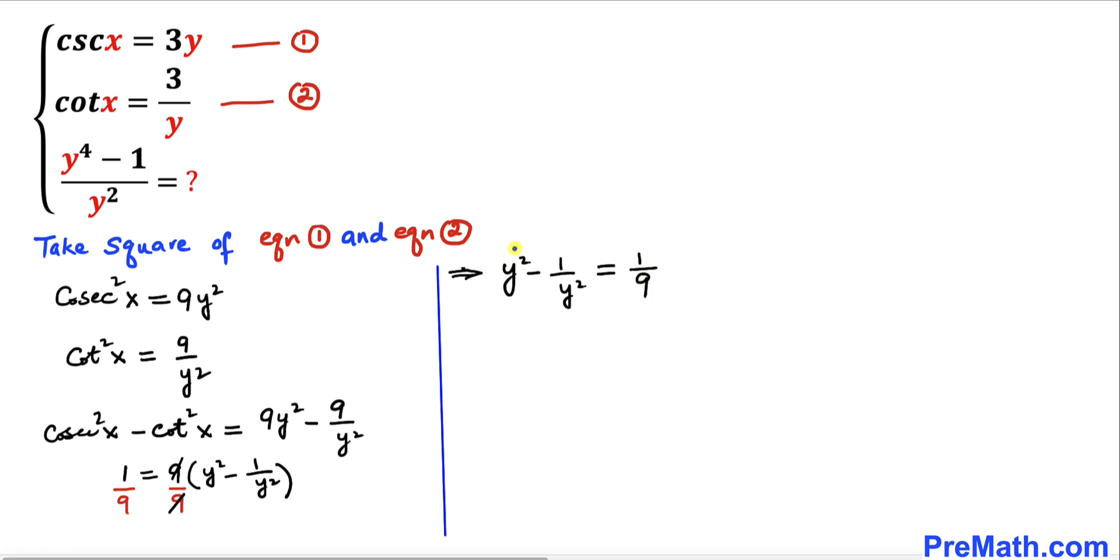Now let's focus on this left hand side. Let's make it a fraction by putting 1 underneath. Now let's do the crisscross method: y squared times y squared gives us y to the power 4, and then minus 1 divided by 1 times y squared gives us y squared.